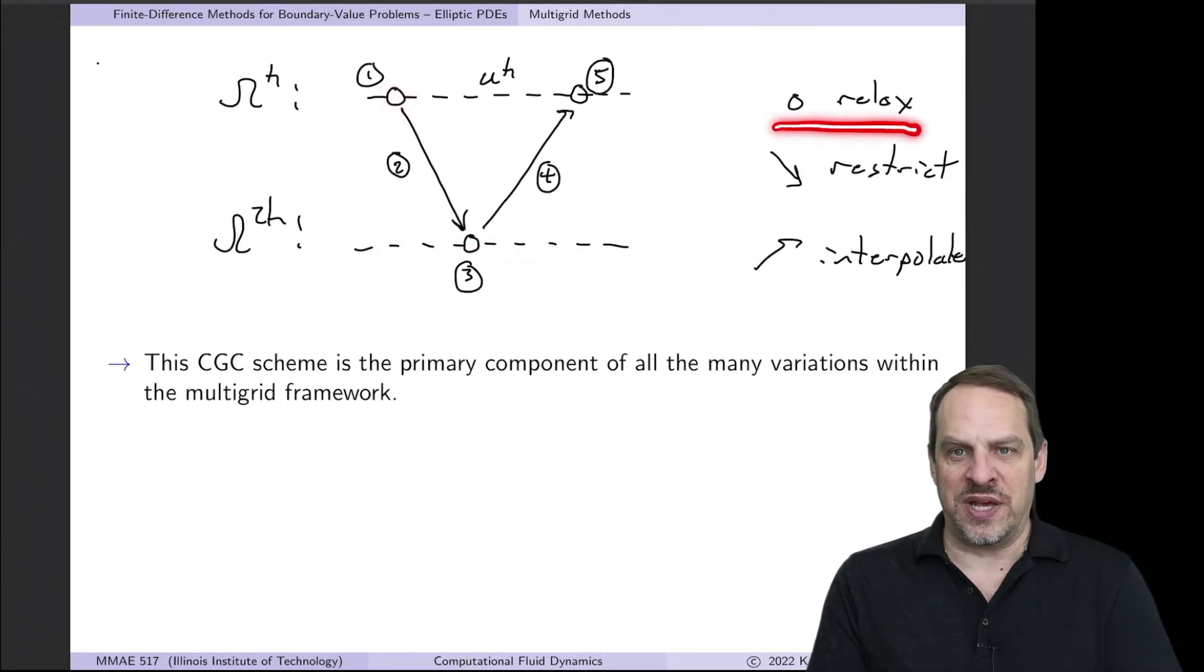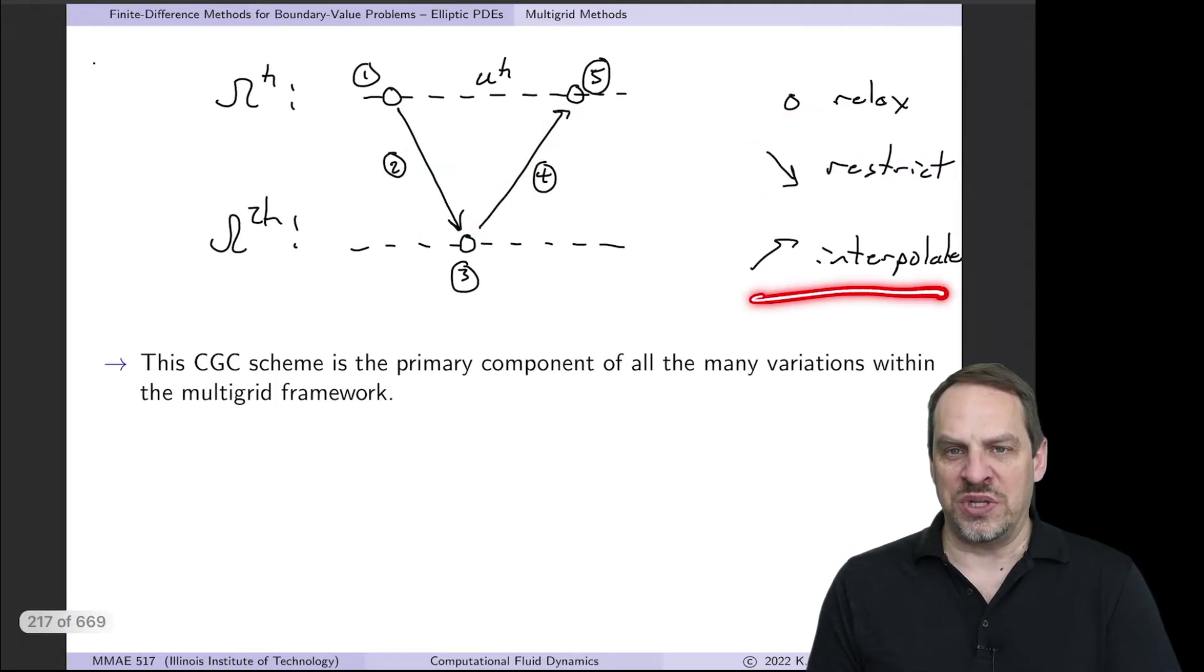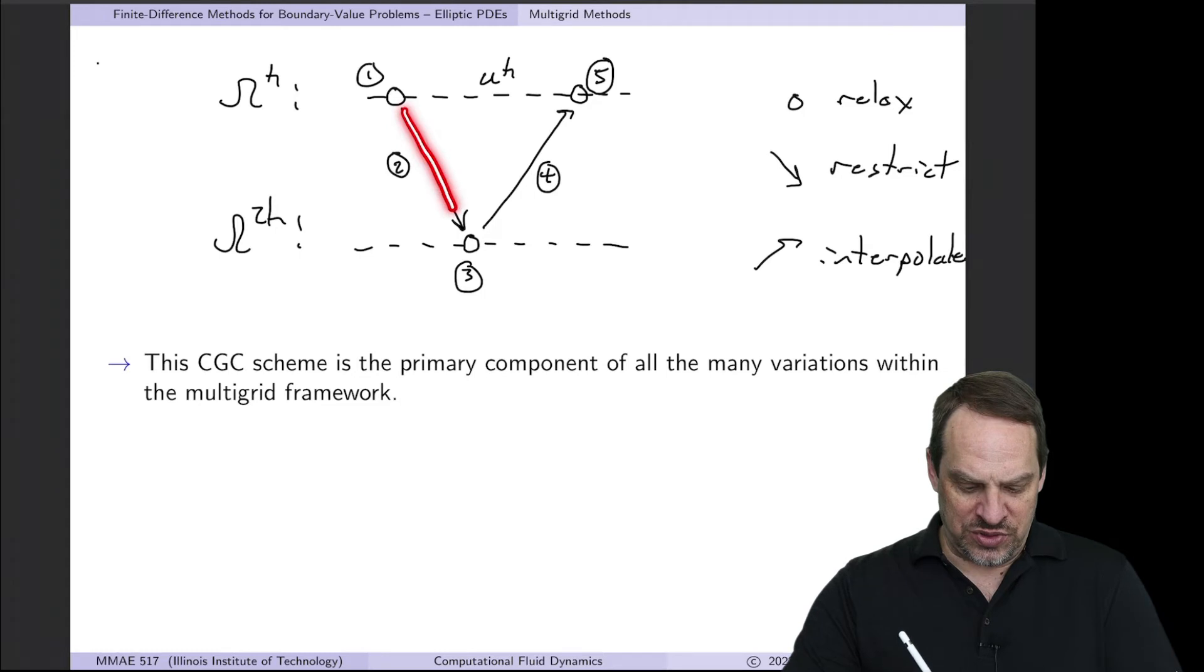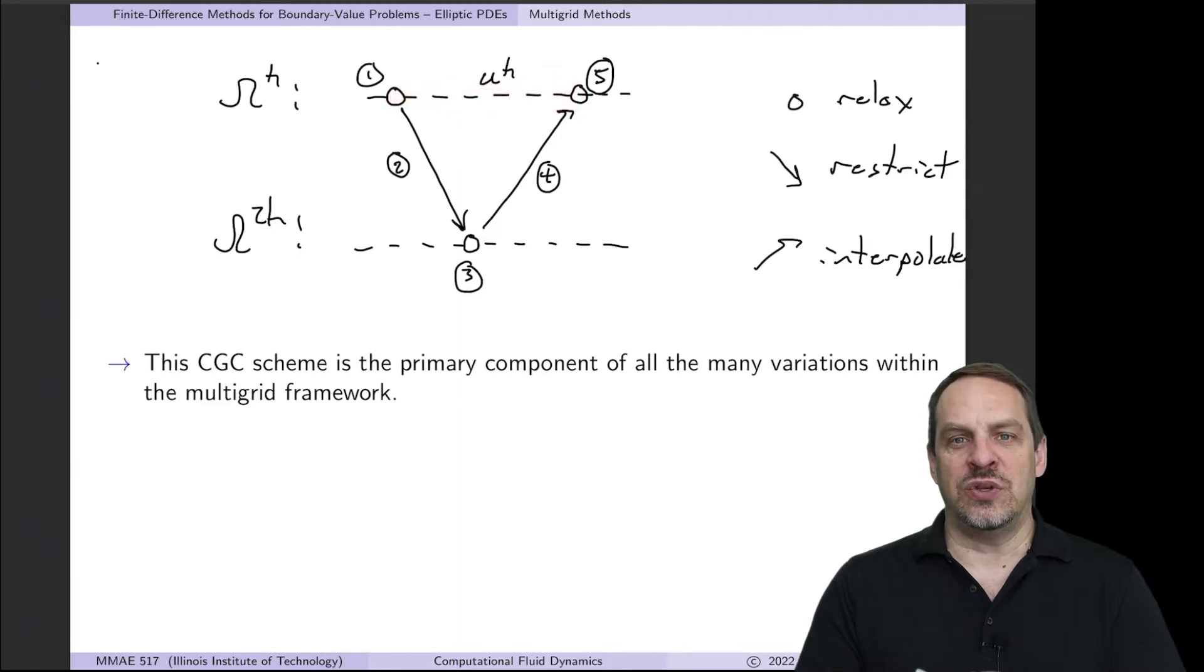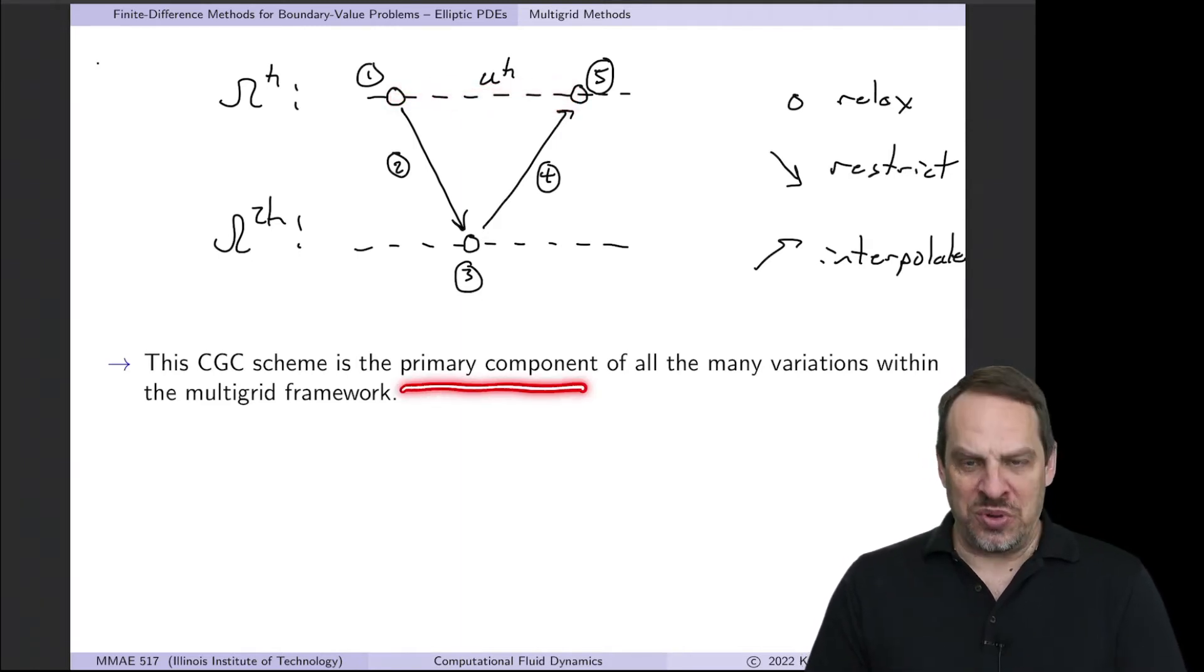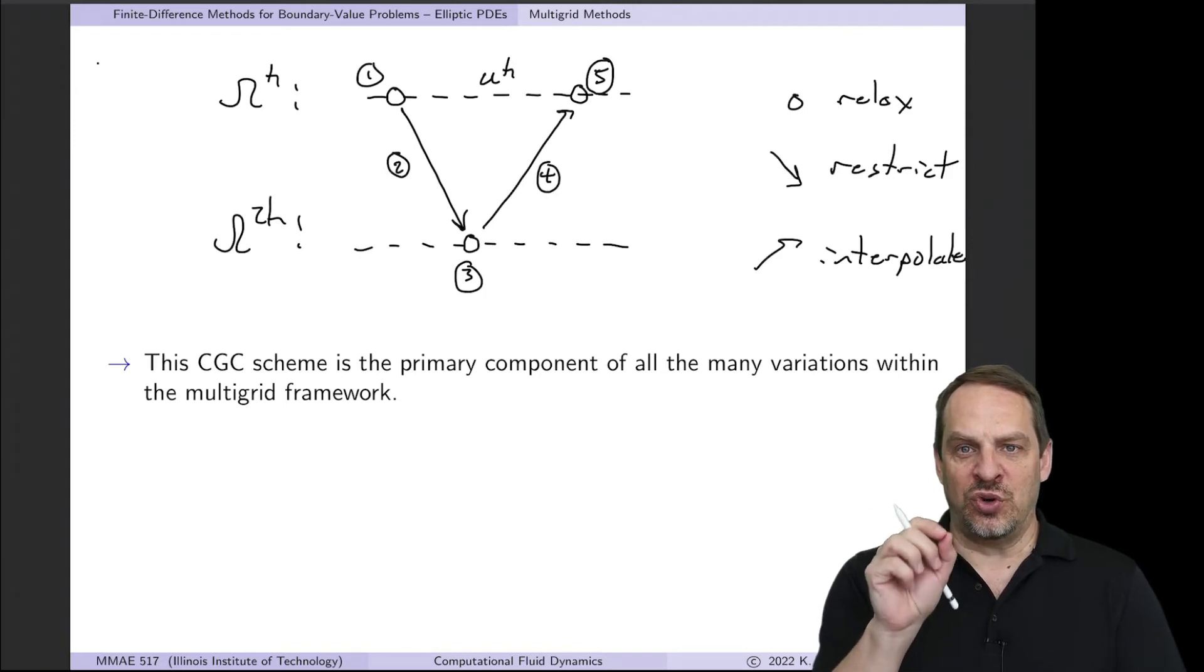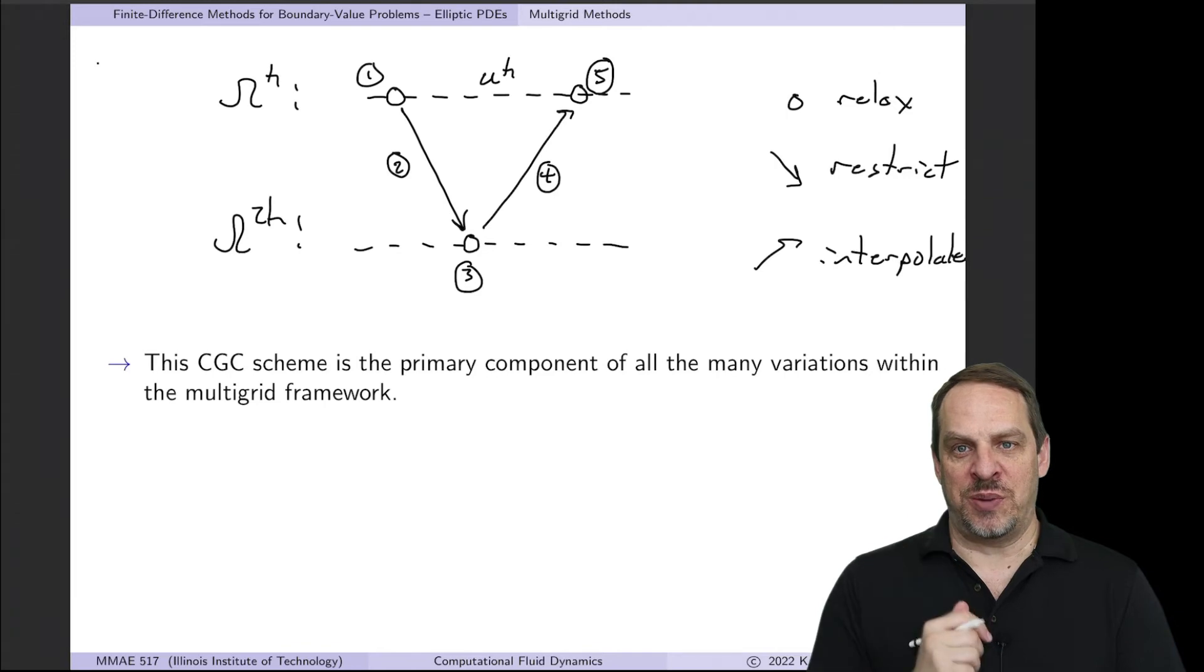The open circles represent relaxation, the down arrows represent restriction, and the up arrows represent interpolation. So step one was to relax on the fine grid on the original variable U. We then calculate the residual and restrict it down to the coarser grid. Then we relax on the error equation in step three. That error we interpolate back up to the finer grid. In step four and in step five, we relax on the original solution and use that to correct the u^h solution that we had in step one. And this is the primary component of all multi-grid methods.